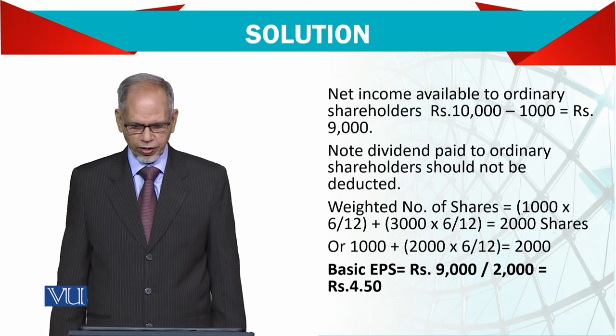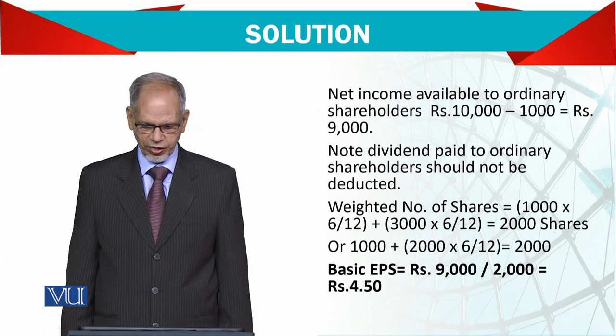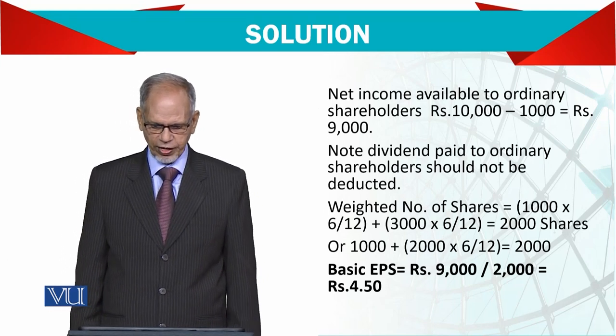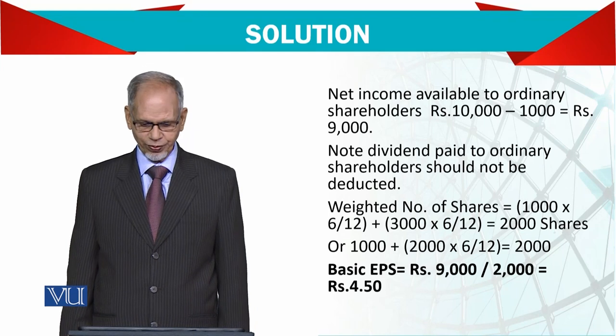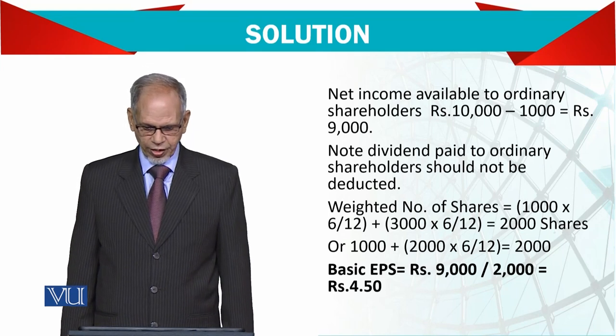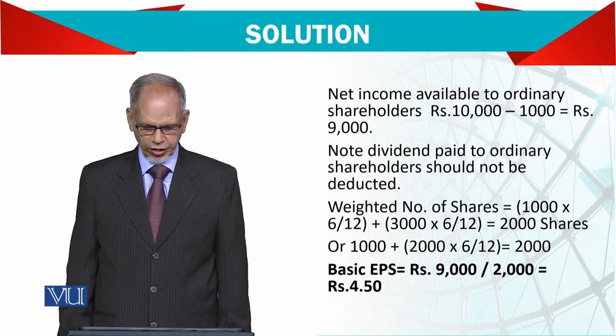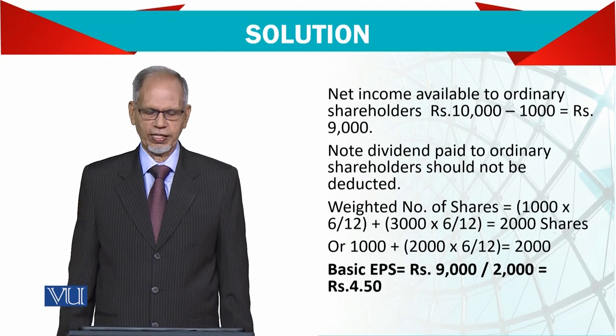Net income available to ordinary shareholders is 10,000 minus 1,000 equals 9,000. The dividend paid to the ordinary shareholders should not be deducted.